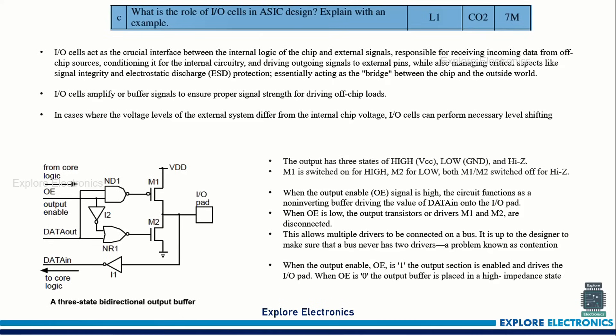The next question: what is the role of IO cells in ASIC design — explain with an example. You need to explain what the IO cell is going to do, how it interconnects or interfaces the logic of the chip with the external signals. One example is given here — an output buffer tri-state buffer — showing how the tri-state output will be achieved with M1 and M2 operations.